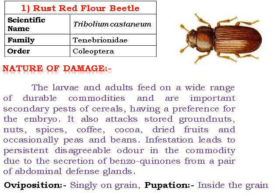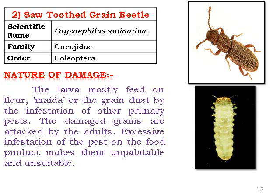Egg-laying occurs singly on the grain and pupation inside the grain, as observed in the red rice flour beetle. The sawtooth grain beetle, as the name indicates, has sawtooth-like mouthparts. It mostly feeds on rawa or maida, causing very great damage. The damage includes offensive odour, and with excessive infestation, the food products become unpalatable and unsaleable. Even processed food material may have bad taste and be refused.